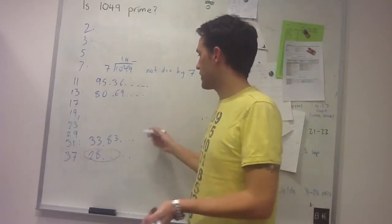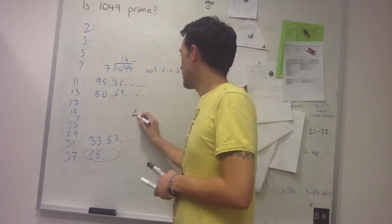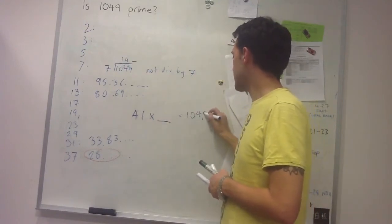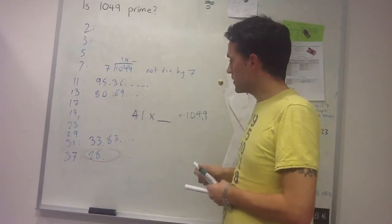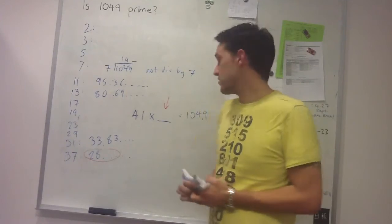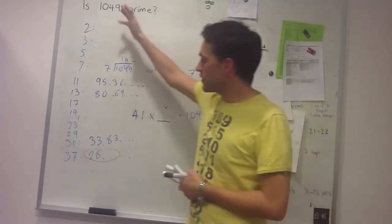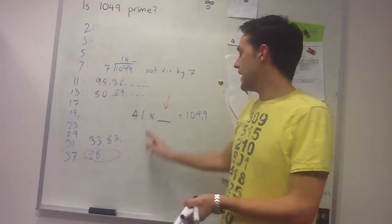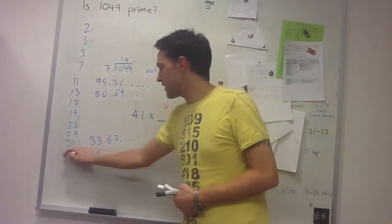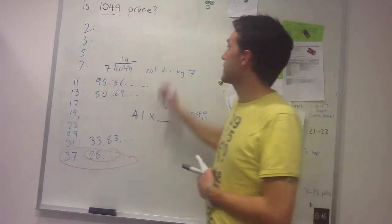And so if anything above 37 is going to be a factor of 1049, it needs to satisfy - say we check 41 next - it needs to satisfy 41 times something equals 1049. And so for numbers greater than 41, this pair that goes in here has to be a number that's less than 41 in order to get to 1049. And I've already, by checking all the primes, I've eliminated anything under 41 being a factor. So in this case, once I get to this point here, I can say that 1049 is definitely prime.